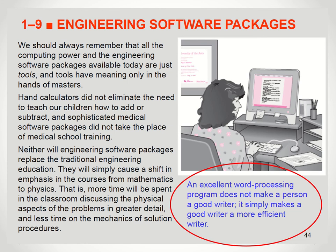When we need to be more accurate, we use more complex differential equations. An excellent word processing program will not make a person a good writer — it simply makes a good writer a more efficient writer. Same thing with computers: a good computer and good modeling software won't make a good model or make a good engineer. Instead, it just makes a good engineer more efficient.